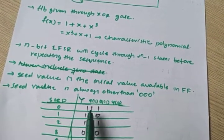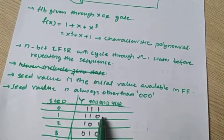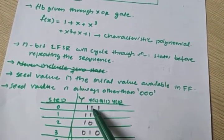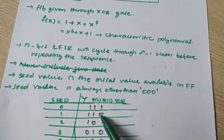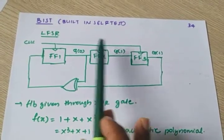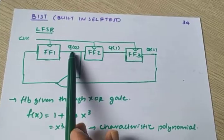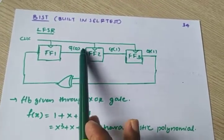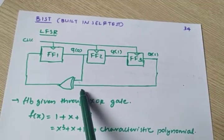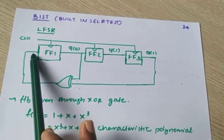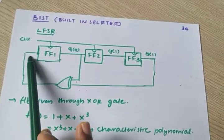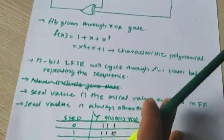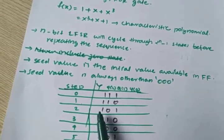After the first clock the output is 1 1 0. Now Q2 = 1, Q1 = 1, Q0 = 0. The XOR of 0 and 1 gives 1, so 1 feeds in. After the second clock, Q2 = 1, Q1 = 0, Q0 = 1, giving 1 0 1.